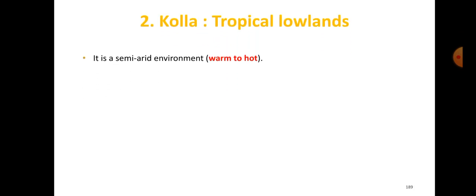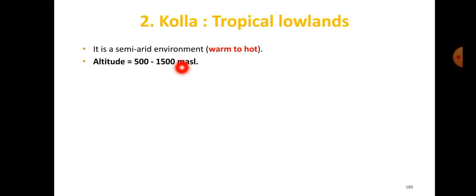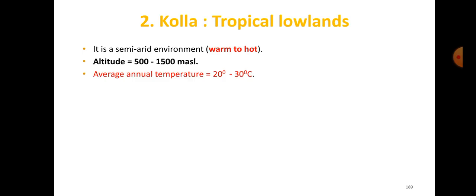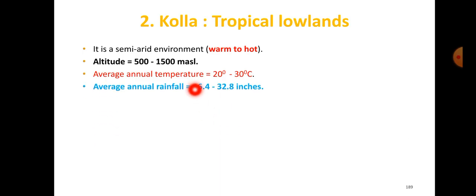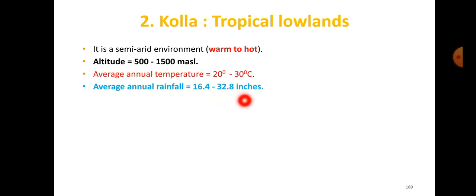The second zone is Kolla, a tropical semi-arid environment, warm and hot. The average annual rainfall is higher than the previous zone. The annual temperature is higher than 36 degrees Celsius, and the average annual rainfall is higher than 37 inches.